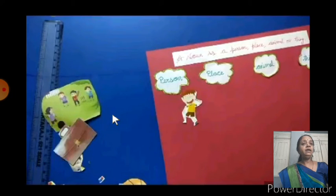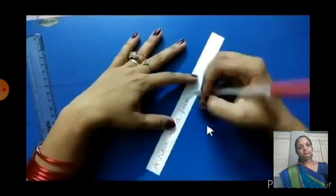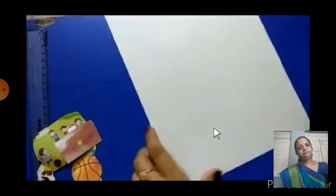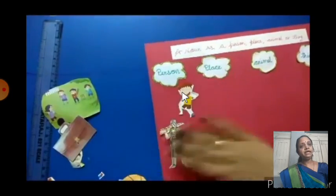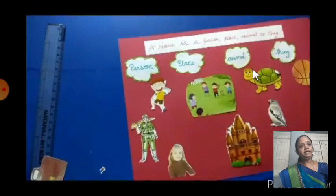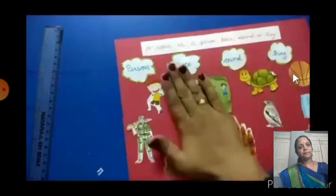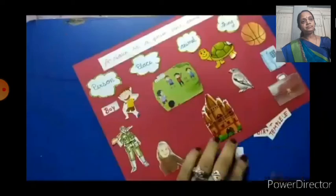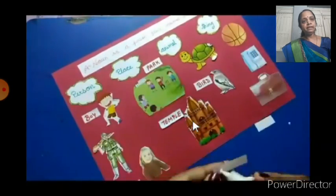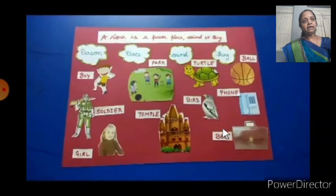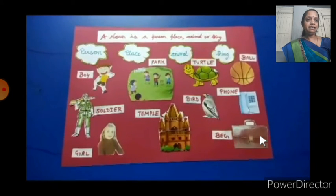Now we watch one — we make a collage for noun. Watch this video. Person, place, animal, and things — it's taking all the pictures under different categories, naming them: girl, park, temple, bird, turtle, bed, bag. Yes, this is a bag. So make this collage and learn more about noun.